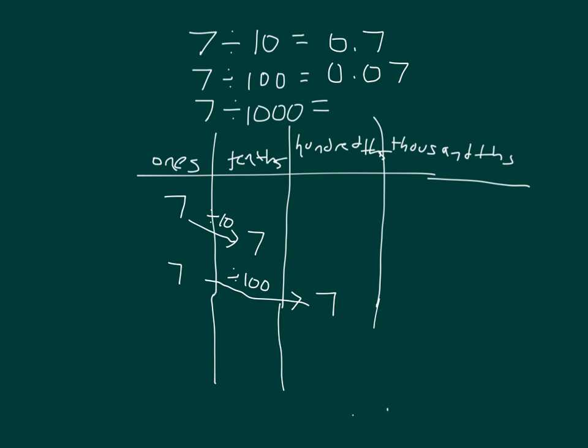Using our place value chart for our final one, when we divide 1 by a thousand, we get 1 thousandths. So that when we divide 7 by a thousand, we get 7 thousandths.